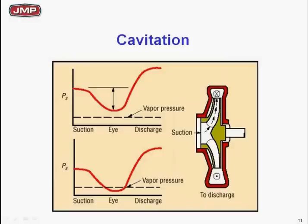Between the suction flange and the eye of the impeller on any centrifugal pump, there will be a pressure drop. That pressure drop, by definition, is the NPSH required — the required pressure drop of that specific pump at that specific flow rate. Looking at the cavitation chart: in the upper curve, the pressure drop stayed above the vapor pressure, so we had no problems. In the bottom curve, the pressure drop dips below the vapor pressure at the eye of the impeller — and we're going to cavitate.